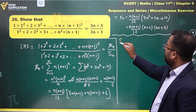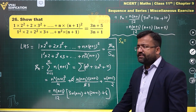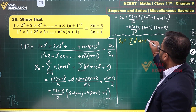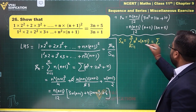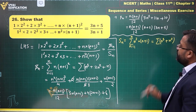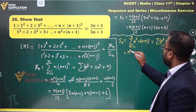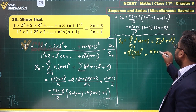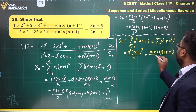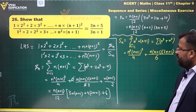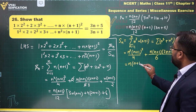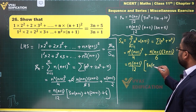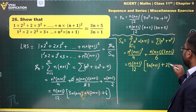Now let's focus on capital Sn, which is the denominator of the LHS. Capital Sn = sigma of n²(n+1) from n=1 to n. Expanding: sigma of n³ + n² = n²(n+1)²/4 + n(n+1)(2n+1)/6. We can take out n(n+1) common and take LCM 12 in the denominator, giving n(n+1)/12 · [3n(n+1) + 2(2n+1)].